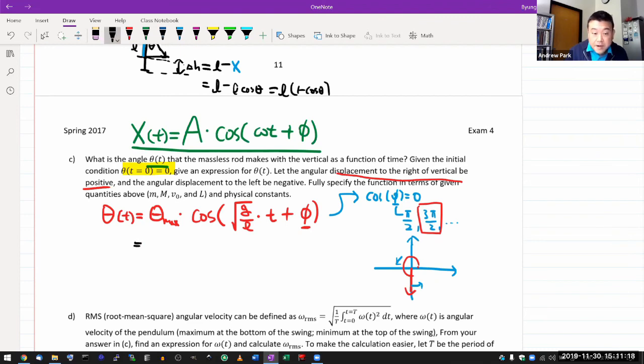so that as time increases, my cosine becomes positive. So this would be one answer. Theta of t is equal to theta max, which can be expressed in terms of these. So let me just write down theta max times cosine of square root of g over l times t plus three pi over two. And as far as the answer goes, this is not a wrong answer.